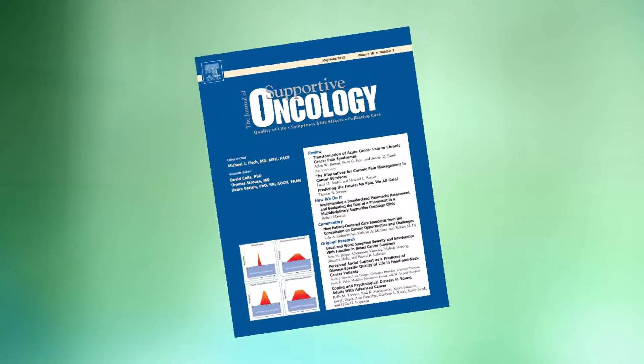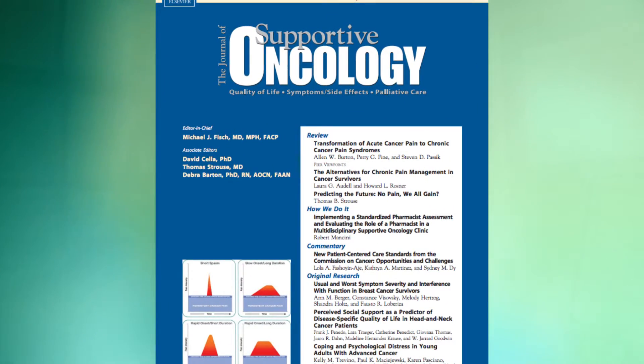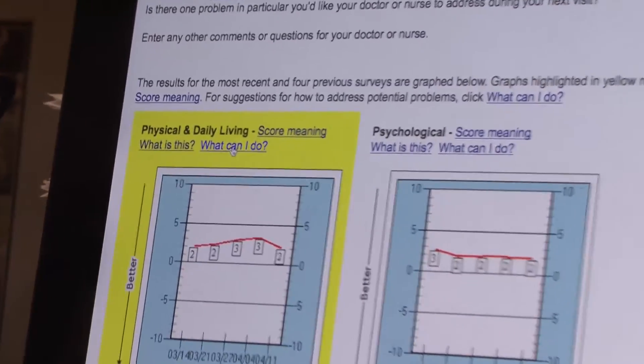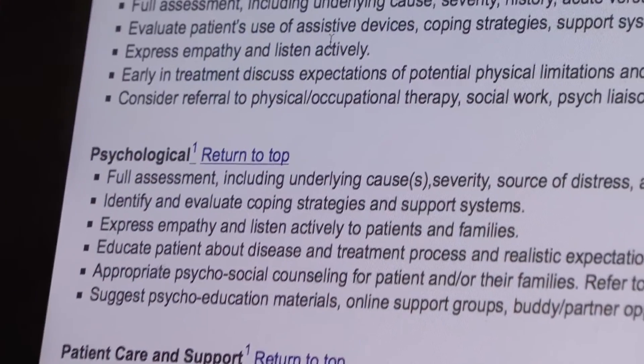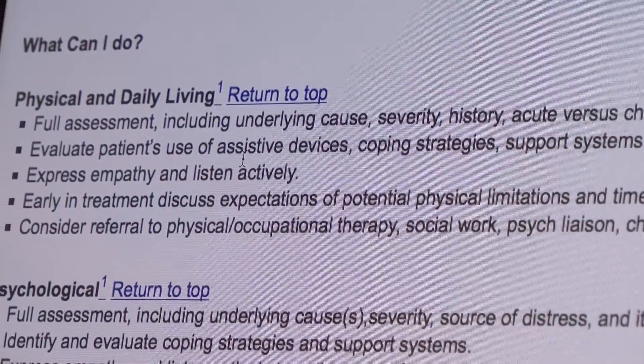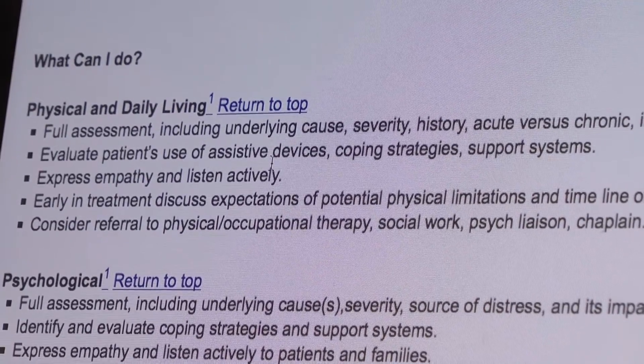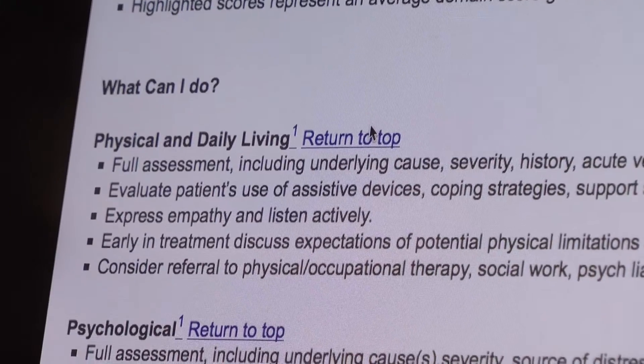We did a project published in the Journal of Supportive Oncology where we developed consensus recommendations for how we at Johns Hopkins can address various topics measured by these questionnaires. So if, for example, a patient's social function question is highlighted, the clinician can click on a link that says 'what can I do' and receive consensus recommendations ranging from referrals to specialties like social work, to lifestyle modification recommendations, to pharmacologic treatment, depending on what the issue is.